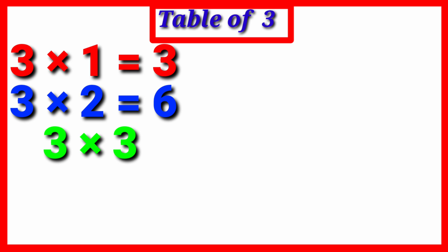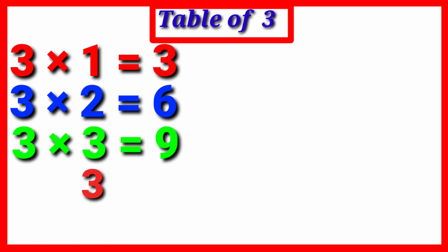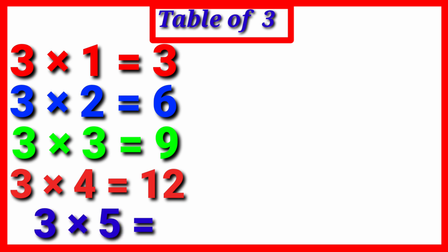Three threes are nine. Three fours are twelve. Three fives are fifteen.